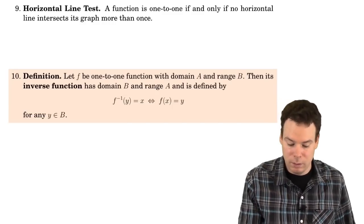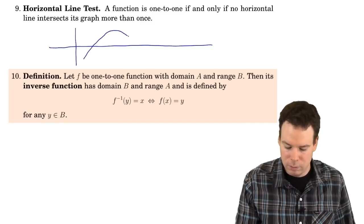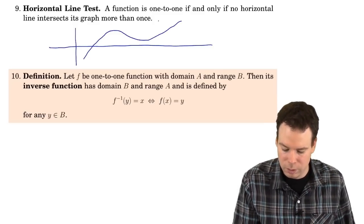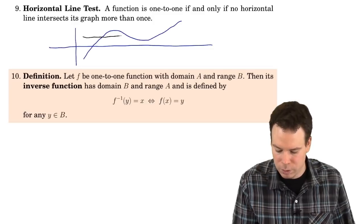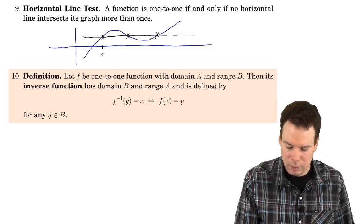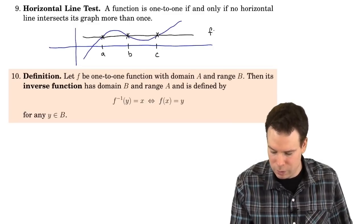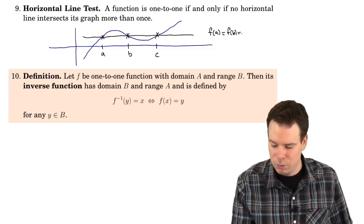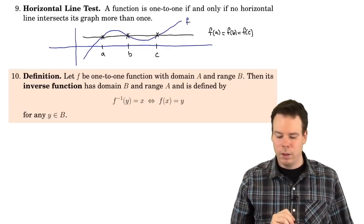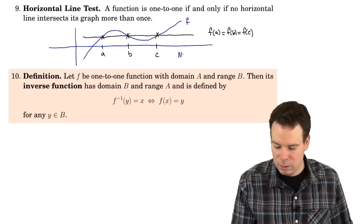You may recall a test known as the horizontal line test which, given the graph of a function, lets you determine whether it's one-to-one just by staring at the graph. What we do is draw horizontal lines everywhere. If we can find a place where a horizontal line hits the graph in more than one spot — in this case hitting it in three places — then we know it's not one-to-one, since f(a) = f(b) = f(c) because they are all at the same height. A function is one-to-one if and only if no horizontal line intersects its graph more than once.